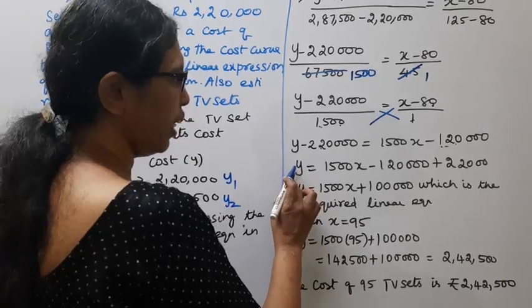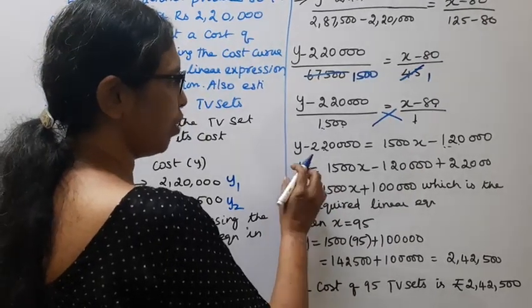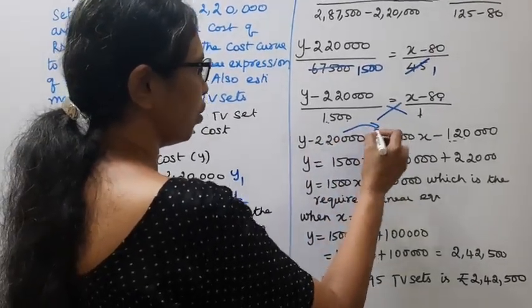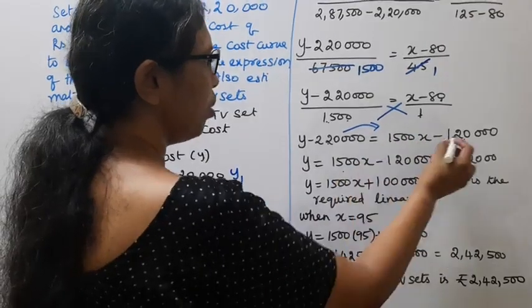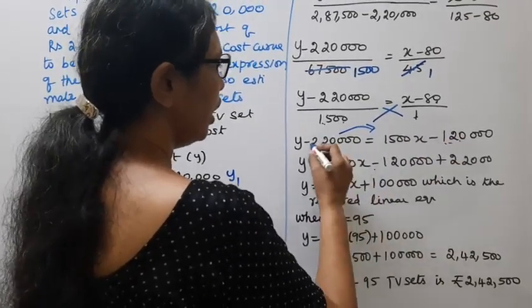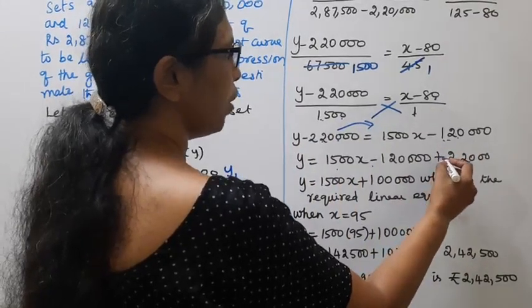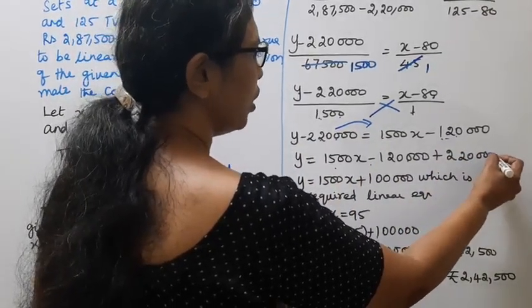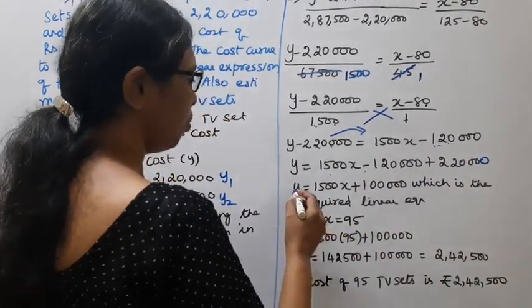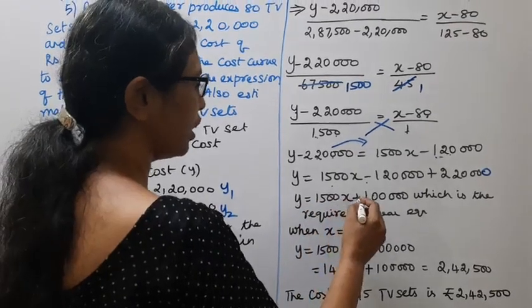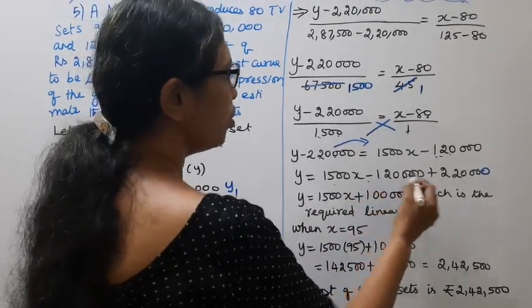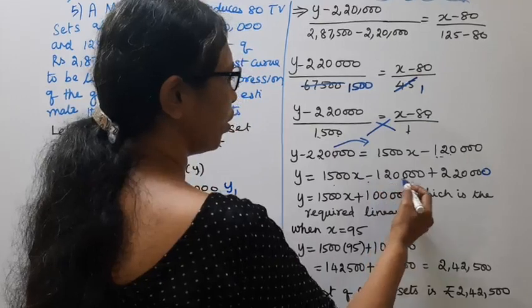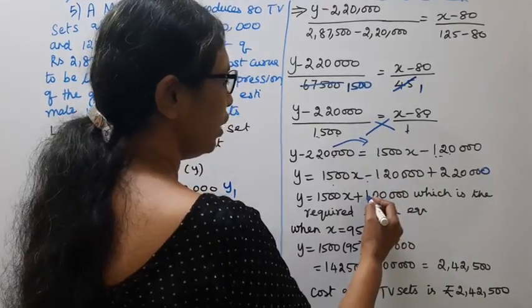Y on the left hand side. On the right side, 1500x minus 1,20,000. This 2,20,000 minus becomes plus. So y equal to 1500x plus 1,00,000.